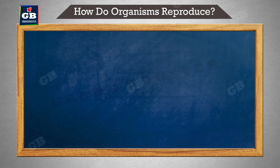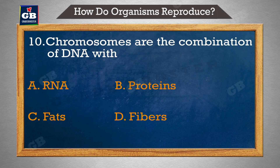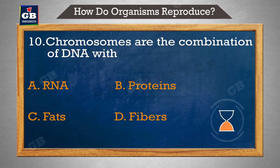Chromosomes are the combination of DNA with — chromosomes ka composition hai DNA aur. A. RNA, B. Proteins, C. Fats, D. Fibers.